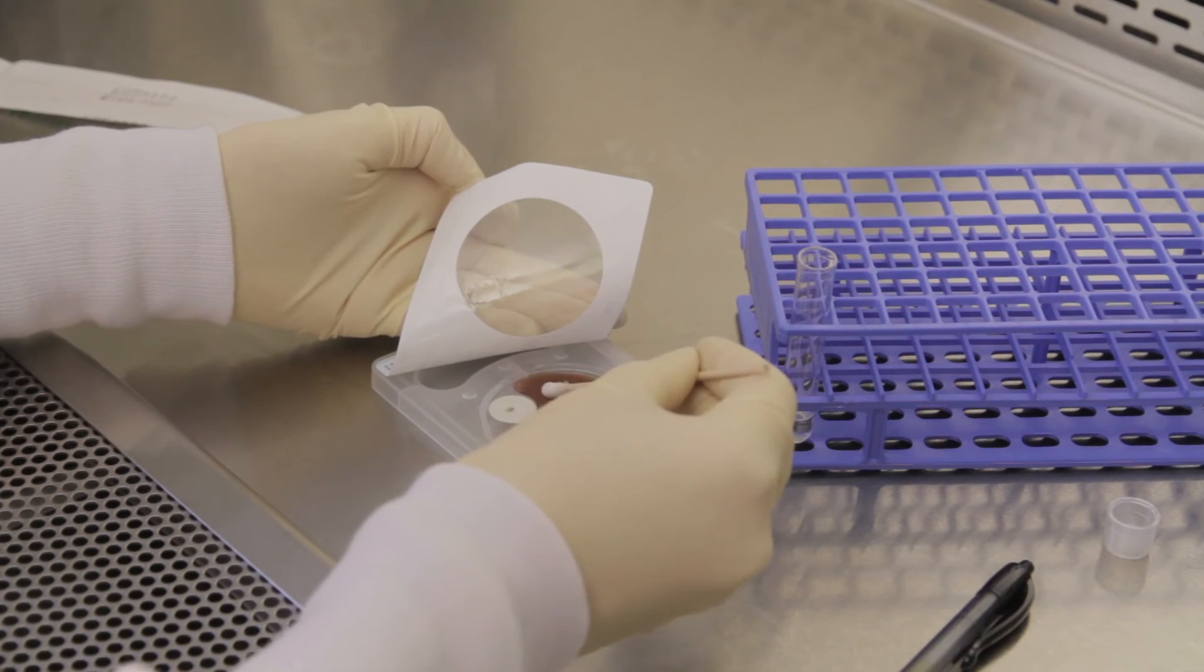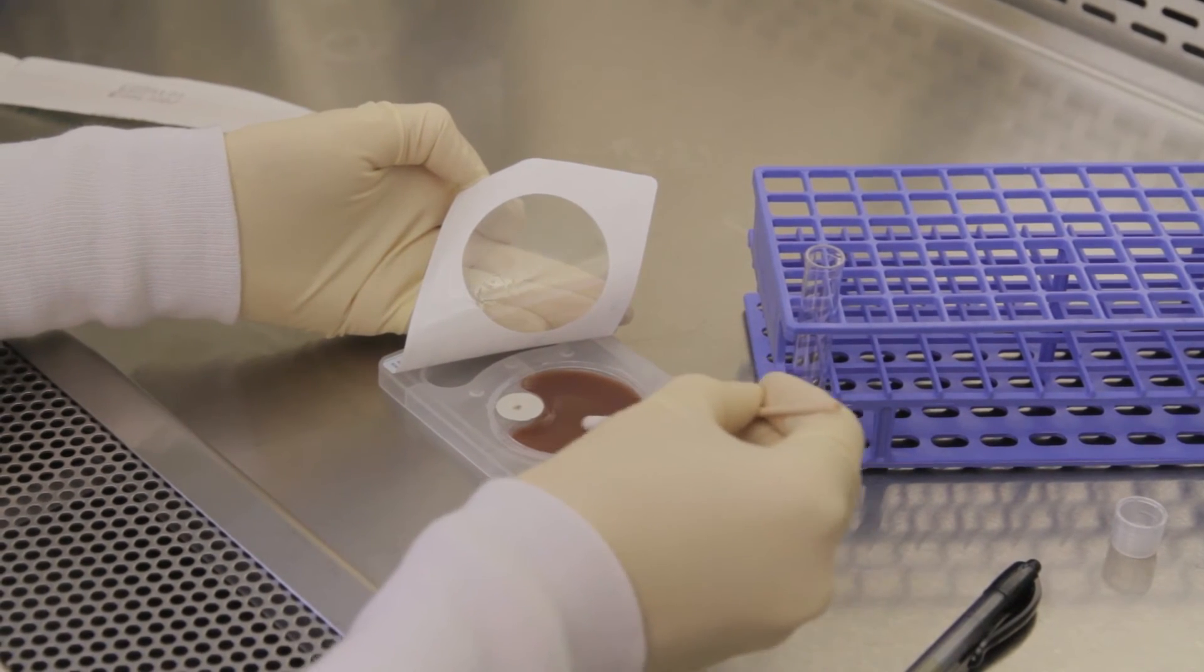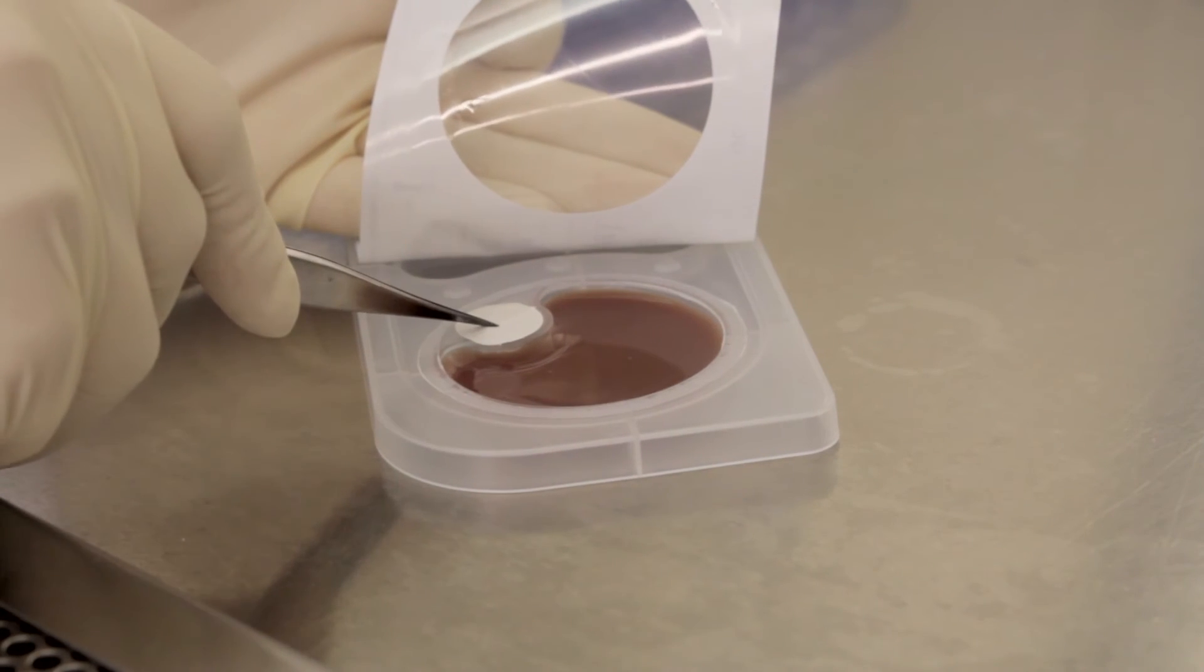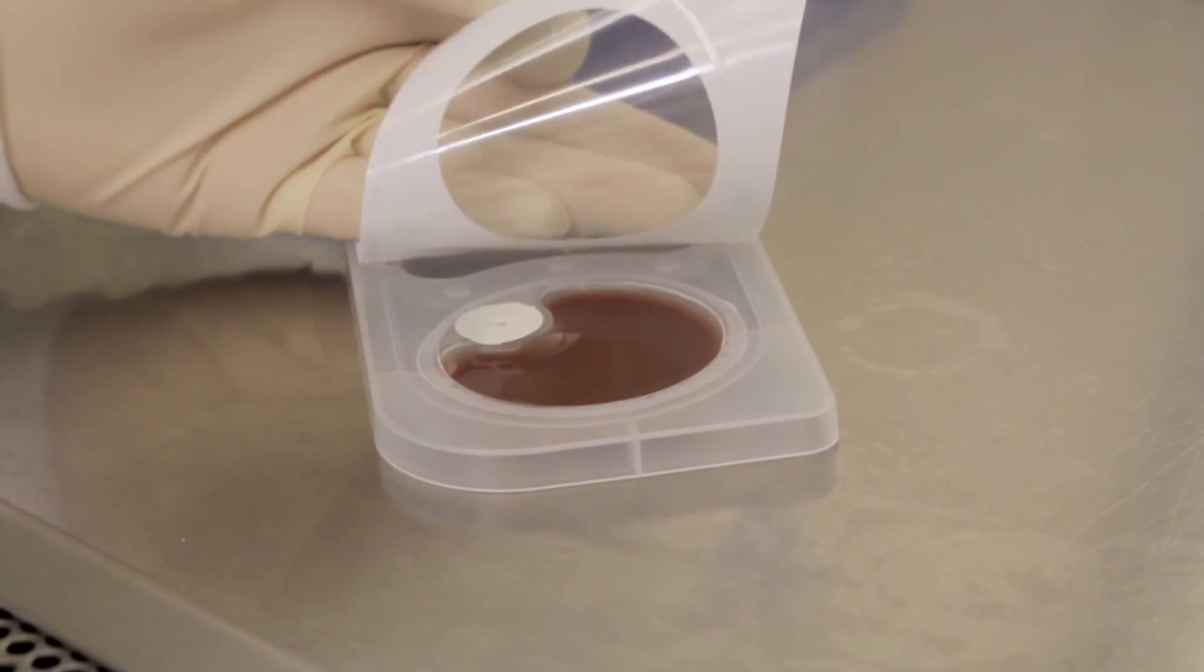When culturing fastidious organisms, the vent can be replaced with an inside tray that incorporates a CO2 tablet that, with a simple puncture, provides the necessary anaerobic environment during incubation.